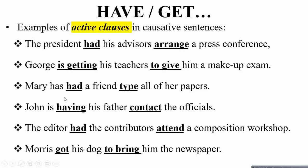Third: 'Mary has had a friend type all of her papers' — 'had' followed by a simple verb form. Fourth: 'John is having his father contact the officials' — 'having' is the continuous form, still followed by a simple verb form. Fifth: 'The editor had the contributors attend a composition workshop.' Sixth: 'Morris got his dog to bring him the newspaper' — 'got' followed by the infinitive form.